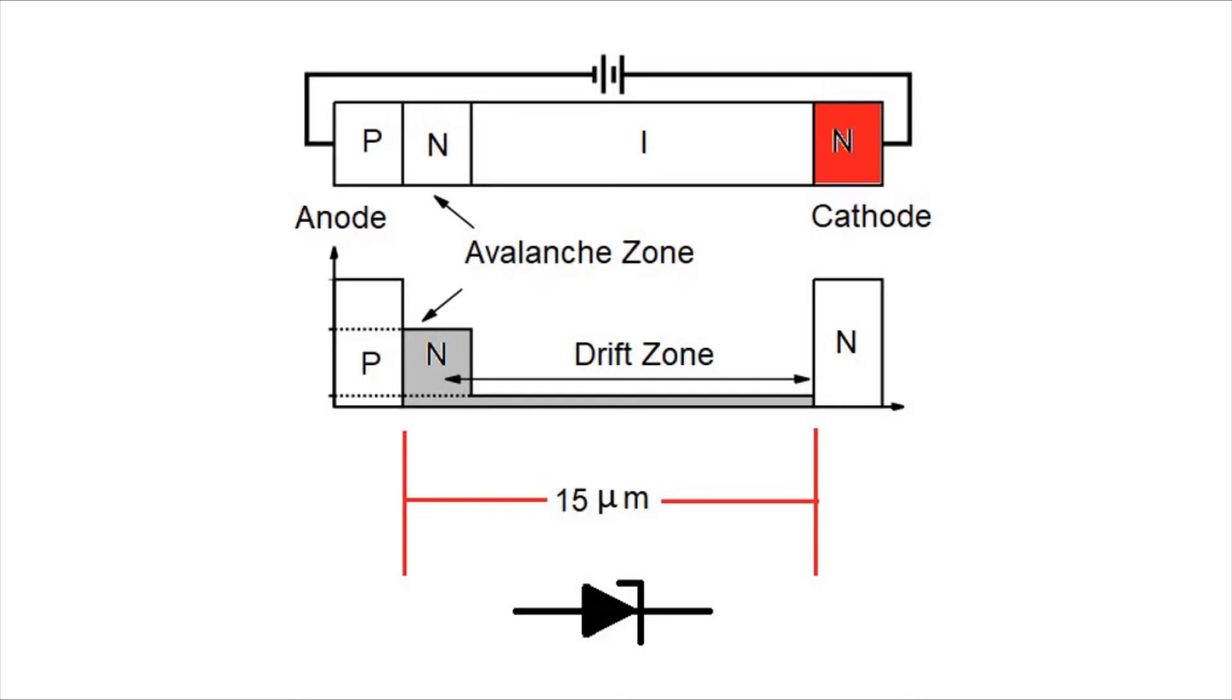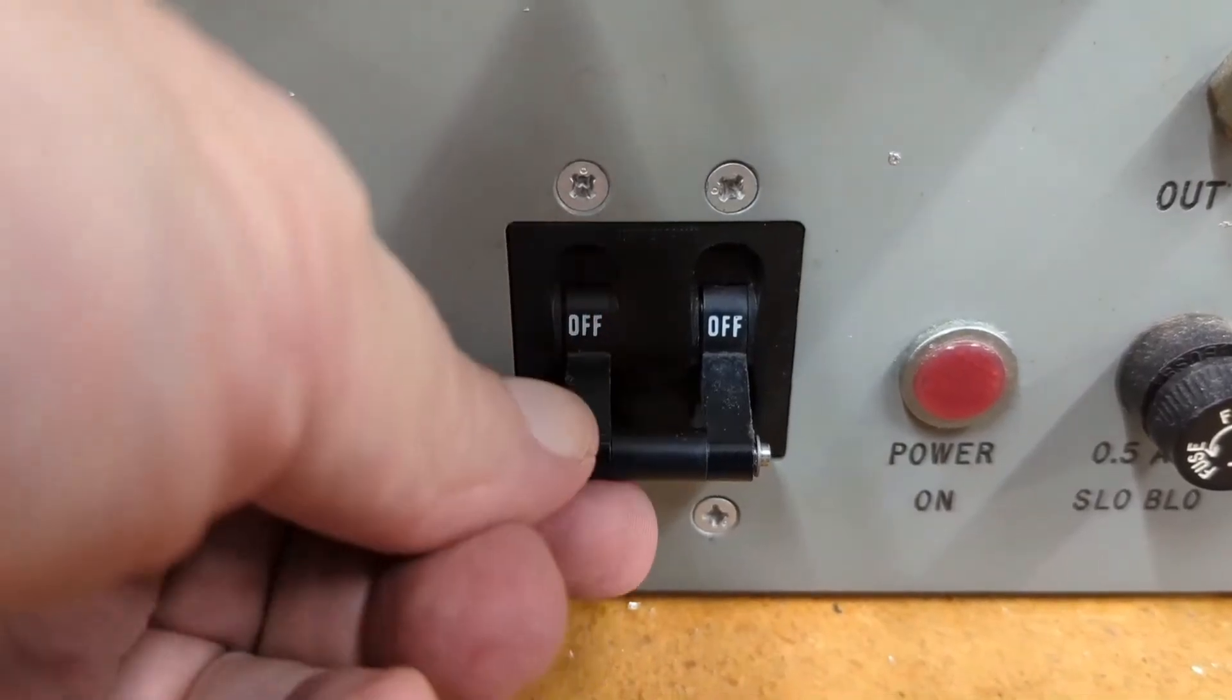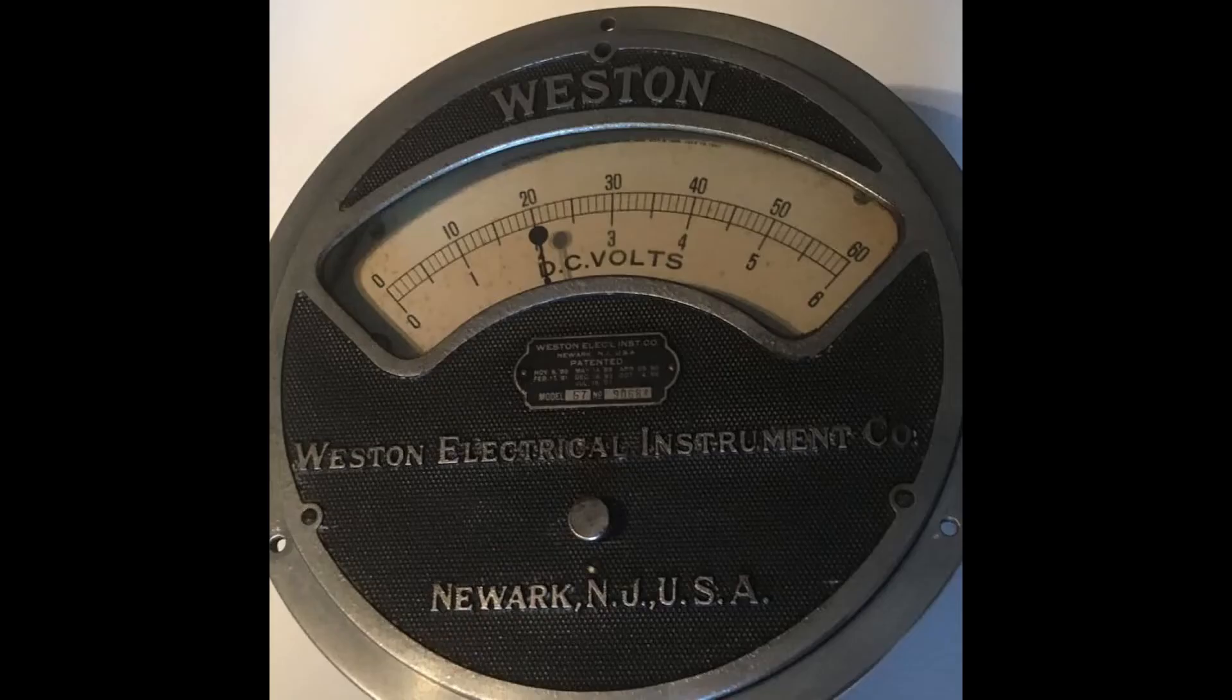Let's apply reverse bias to the IMPAT diode and see what happens. Wait a minute, let's start with a little less voltage.